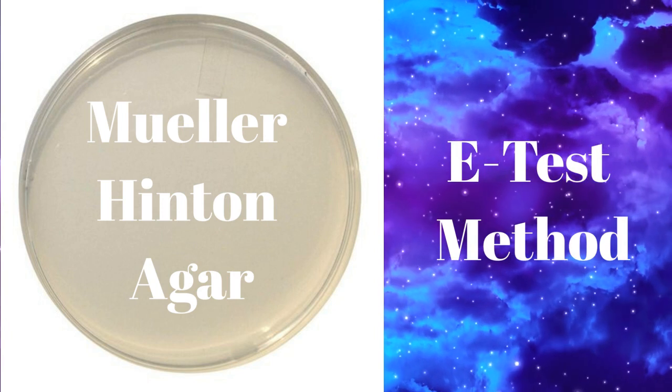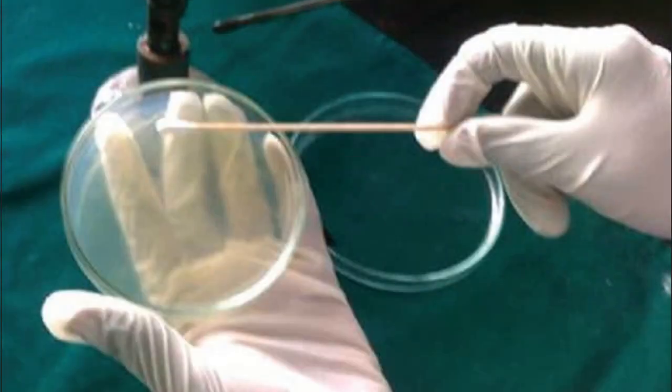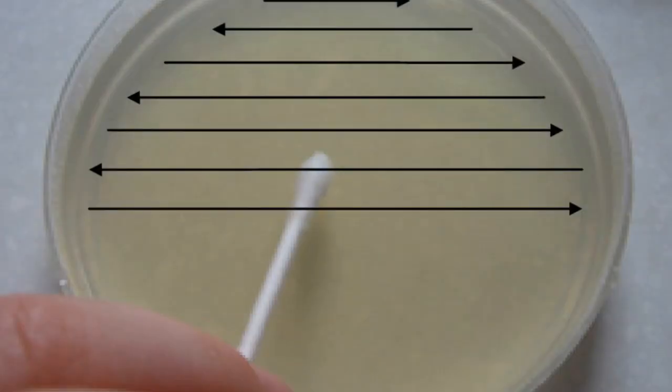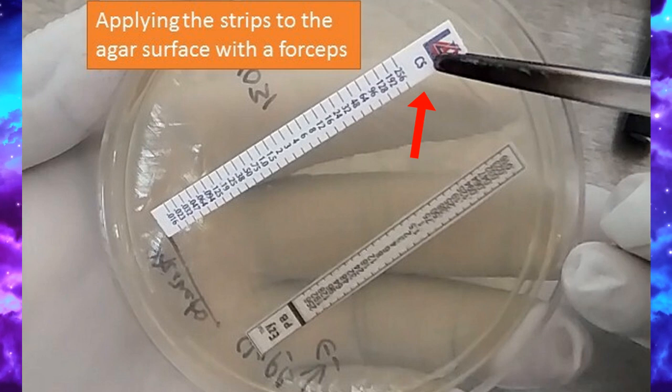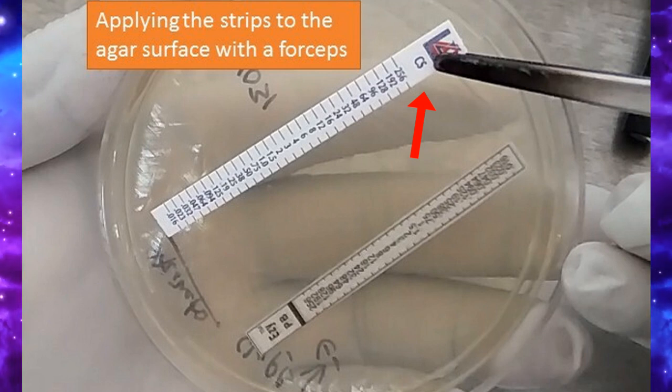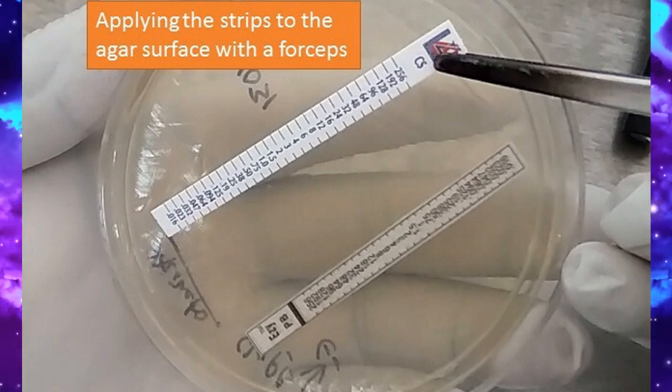In this method, the inoculation of Muller-Hinton agar is the same as for the disc diffusion method where we make a lawn culture with the test strain of the bacterium to be tested. After this, we apply the E-strip to the agar surface with the help of forceps with the side of strip showing the scale facing upwards.